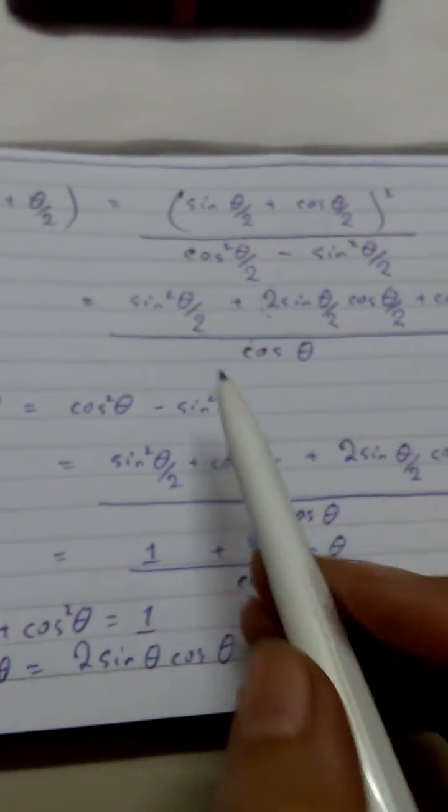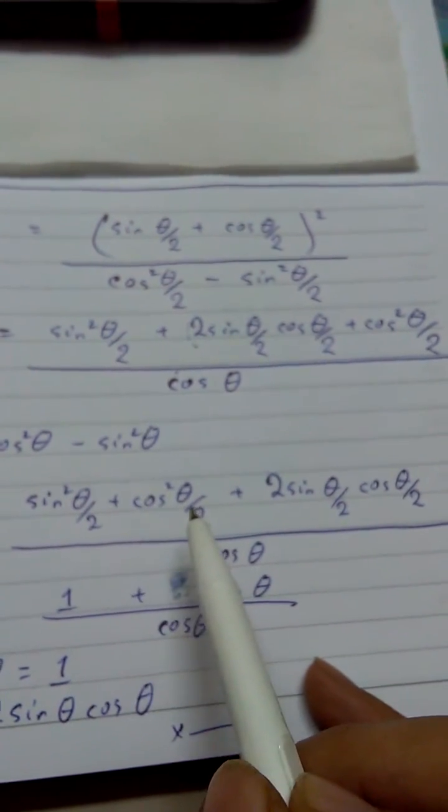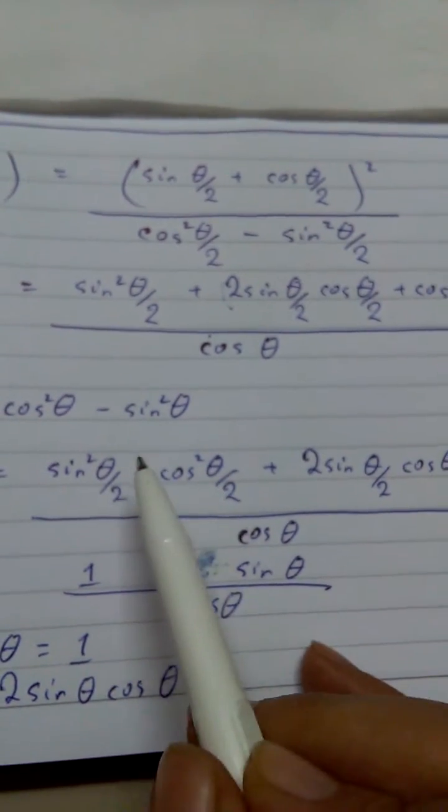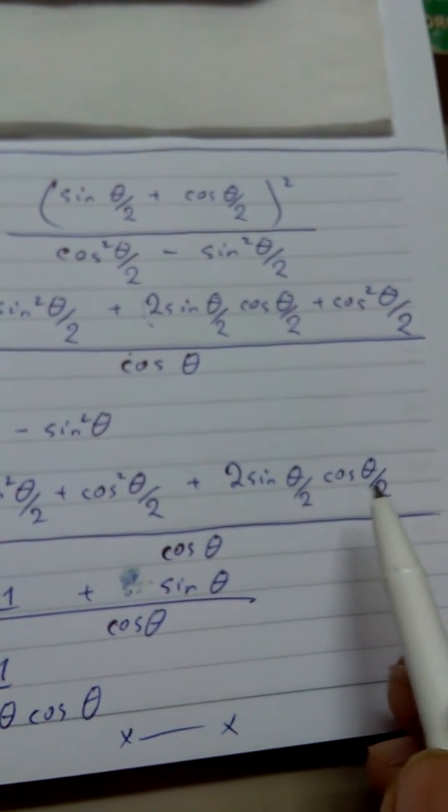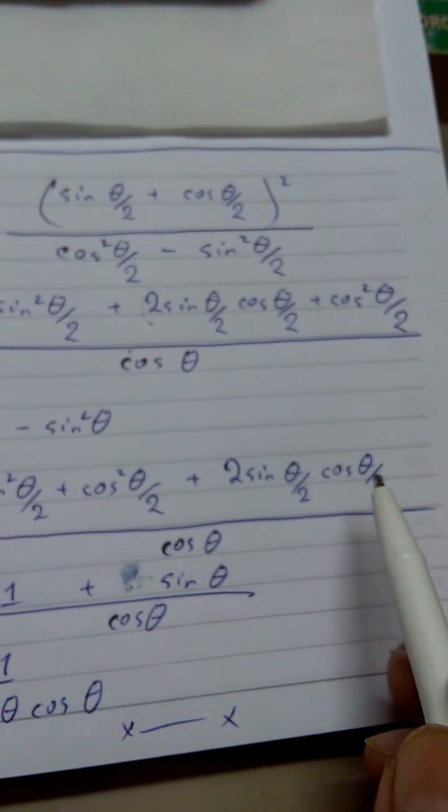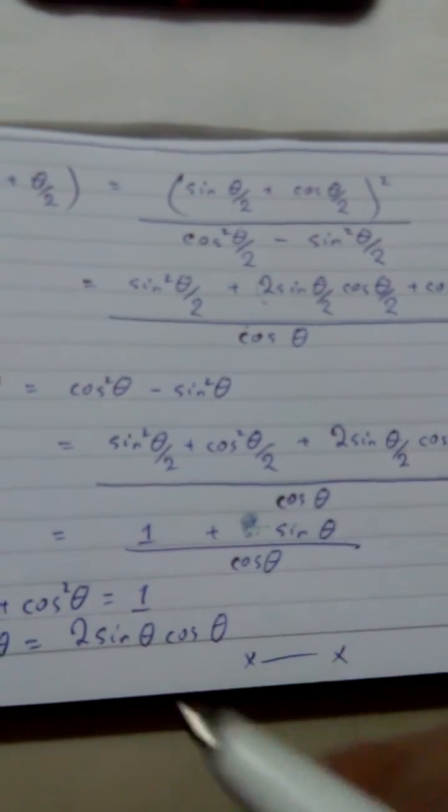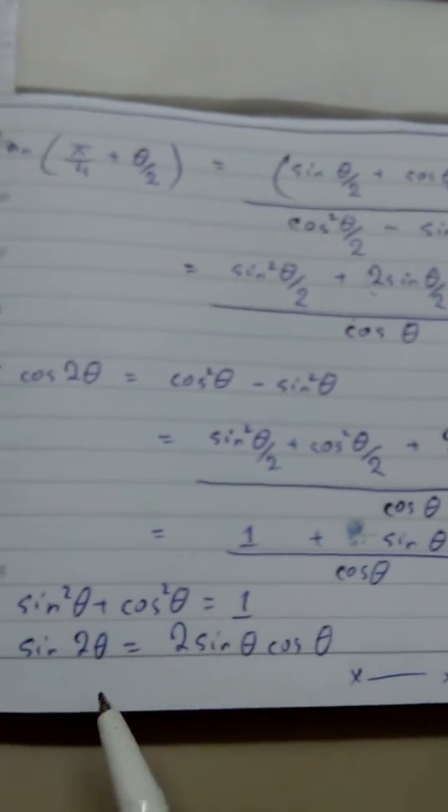So at the place of θ, if I take another common angle θ/2, then sin² θ/2 plus cos² θ/2 is equals to 1, and 2 sin θ/2 cos θ/2 can be replaced by another general trigonometric formula, which is this.